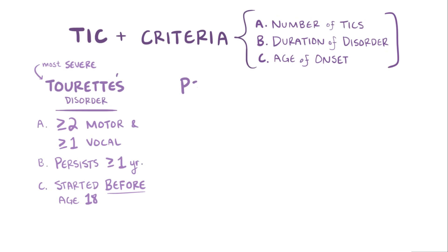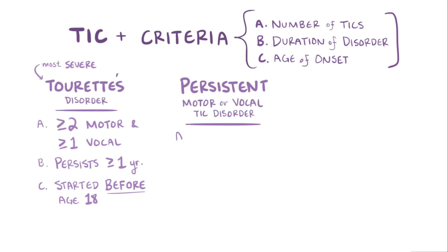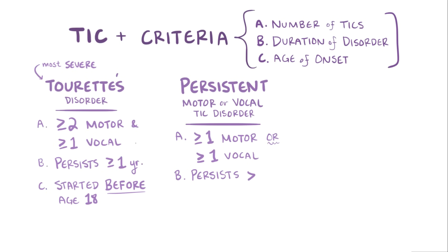For a diagnosis of persistent motor or vocal tic disorder, also called chronic tic disorder, an individual must have either a single or multiple motor tics or vocal tics, but not both. Like Tourette's, the tics have to persist for at least one year and must have started before the age of 18.